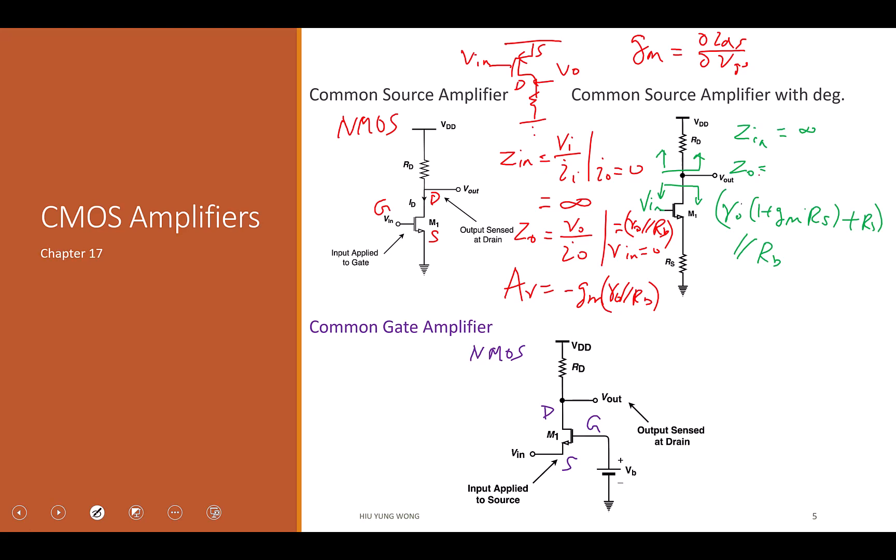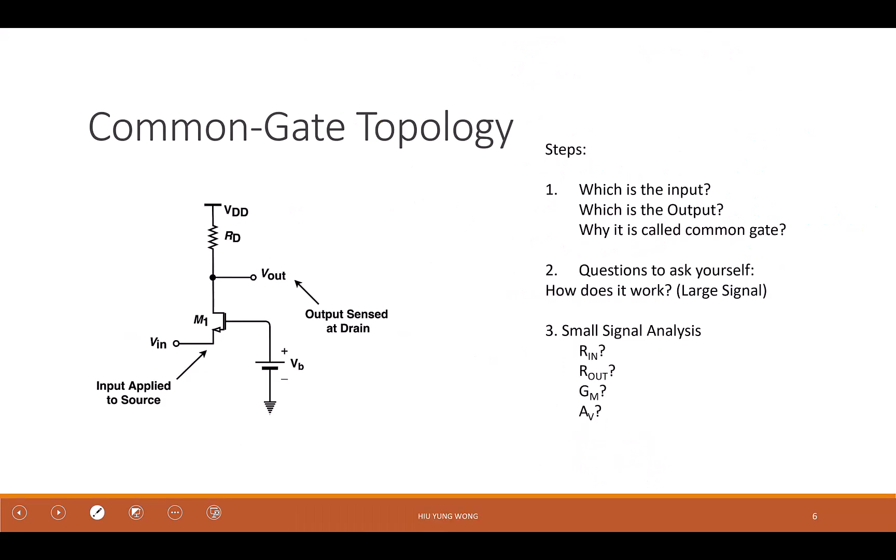So where is the input? Where's the input here? At the source. And where's the output? At the drain. Gate is where we have a common potential. That's why it's called common gate.